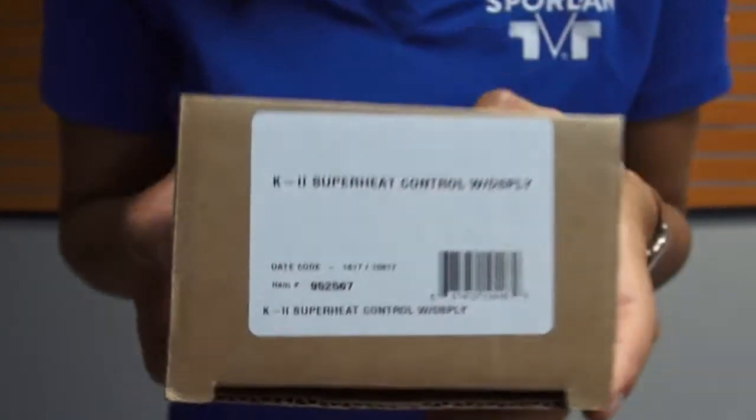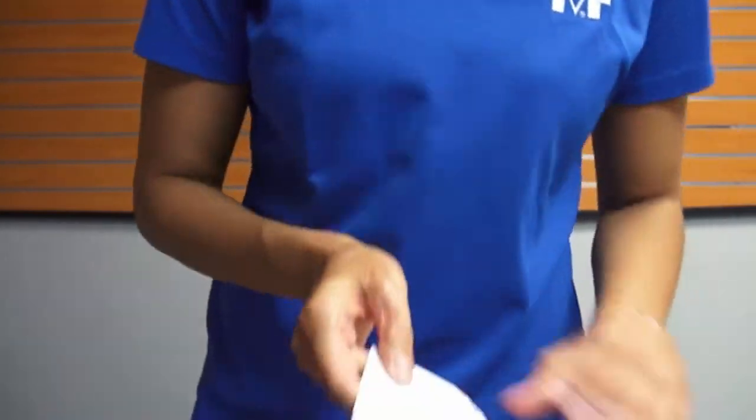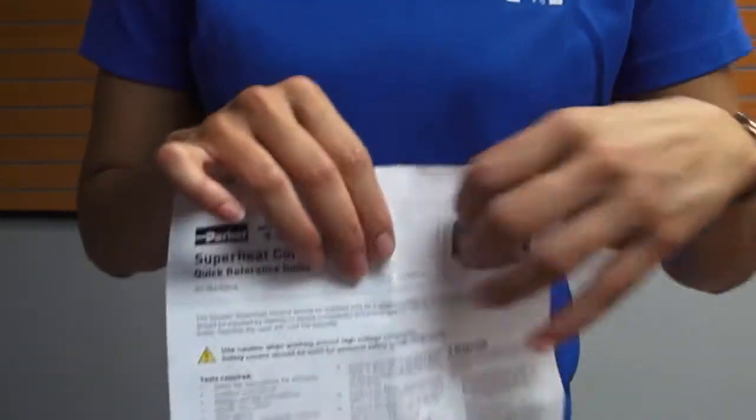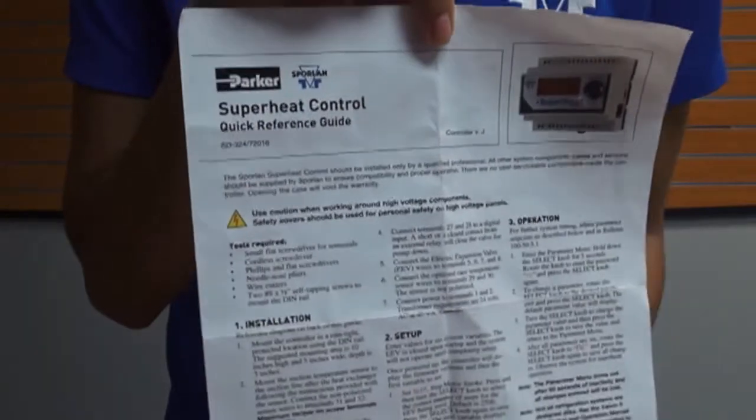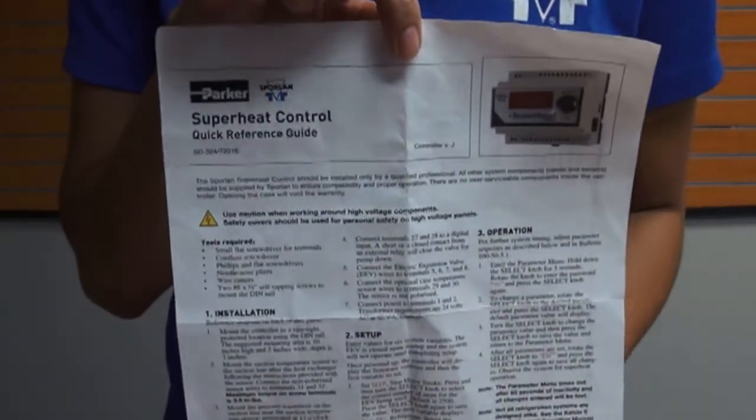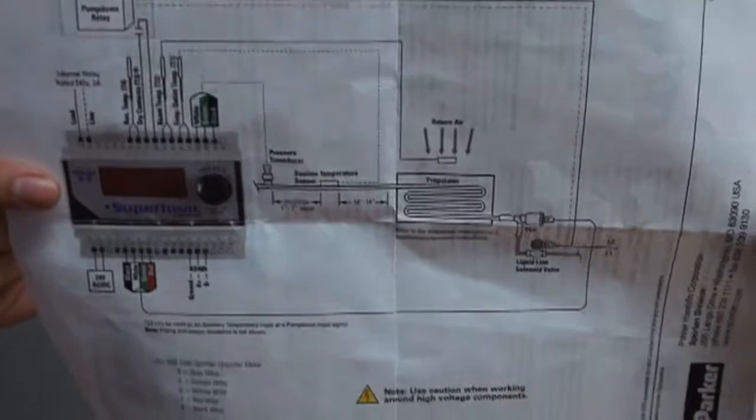This is our superheat controller, item number 952567. When you open it up, you'll find the quick reference guide to installation and setup of your Kelvin 2 controller. You're more than welcome to read through it. A lot of the information is the same that's in this video.